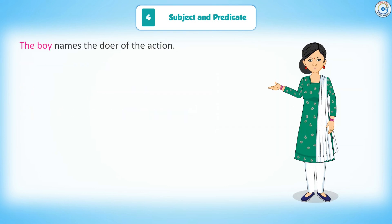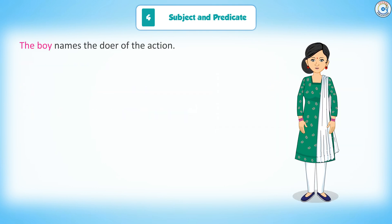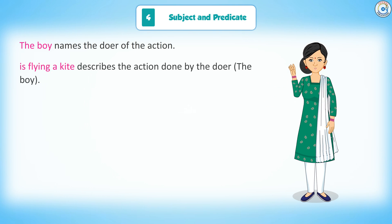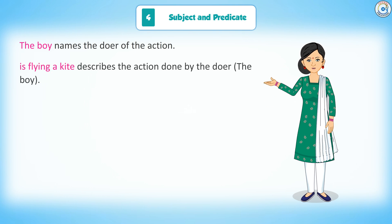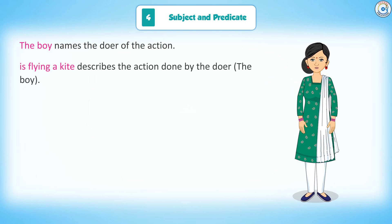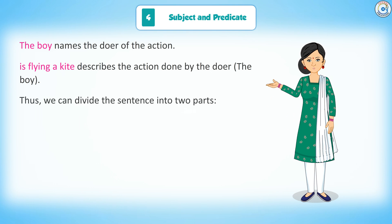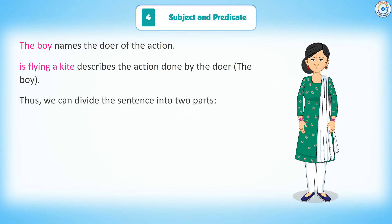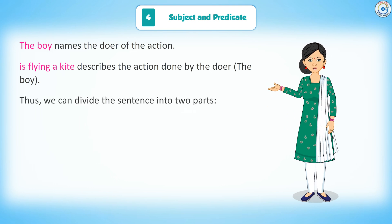The boy names the doer of the action. 'Is flying a kite' describes the action done by the doer, i.e. the boy. Thus, we can divide the sentence into two parts.